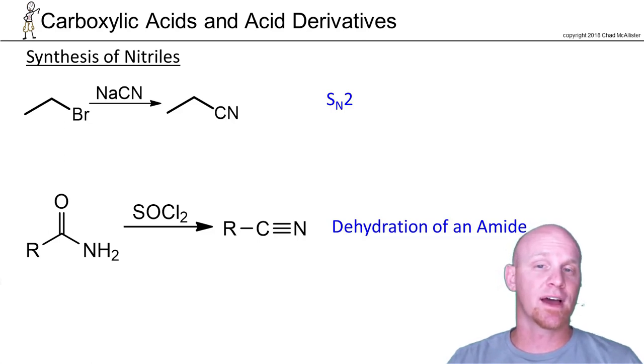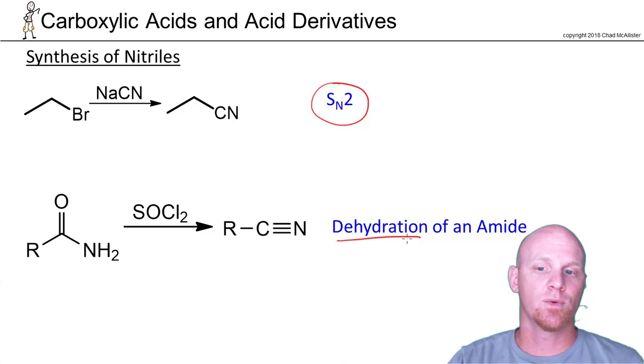We'll start with synthesis. We could do an old reaction here, just SN2 with cyanide. The other way is new and is technically a dehydration reaction where we dehydrate an amide. The reagent of choice could be one of three: SOCl2 is most common, but you might also see P2O5 or POCl3.